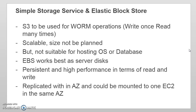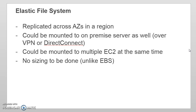Moving on to EFS — people often need a file system that can be mounted on different servers at the same time, meaning five different servers should be able to write to one shared file system. That type of offering wasn't available earlier. Some people mount an S3 bucket as a disk on EC2 using utilities like S3fs, but that is not recommended — it doesn't perform well, gives errors, and files sometimes don't sync properly. Instead, you can use the Elastic File System.